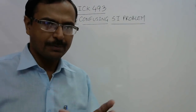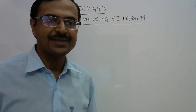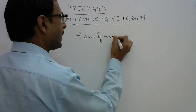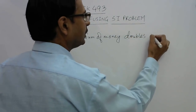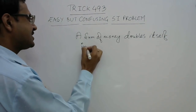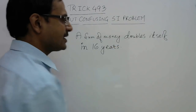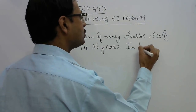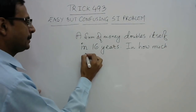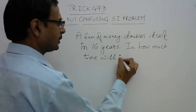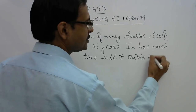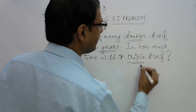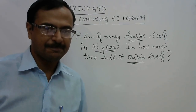Today I'm going to tell you one problem which is often confused by students. Remember, I'm talking about simple interest. The question goes like this: a sum of money doubles itself in 16 years. You need to tell me in how much time will it triple itself. Give it a thought.